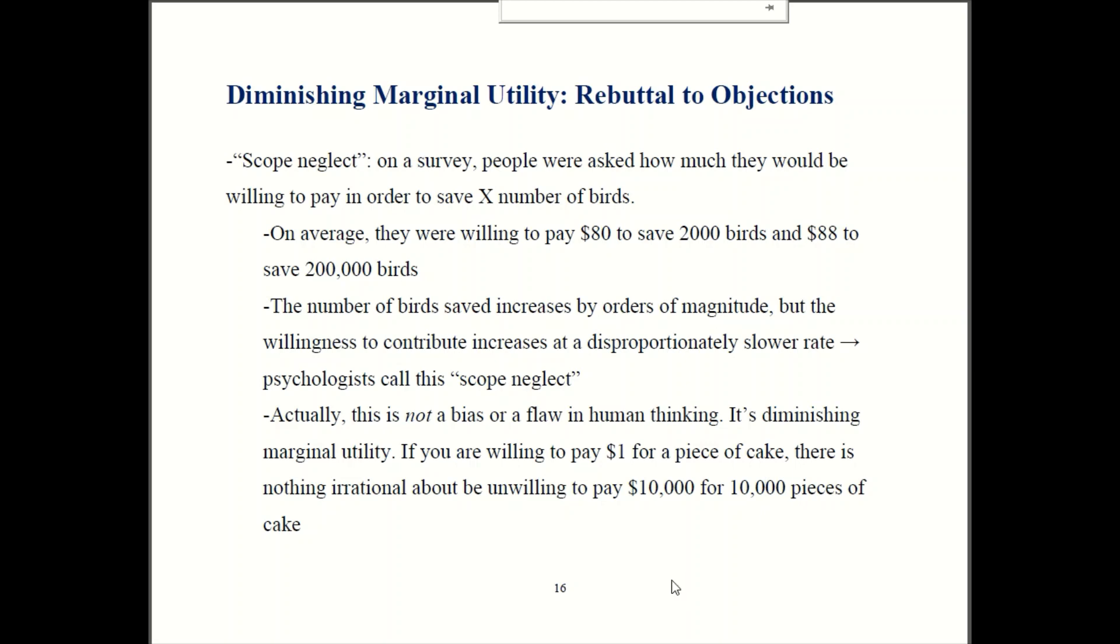So here's another example I heard about. It was written by a psychologist who also did some work in behavioral economics. He wrote about something he called scope neglect. So in a survey they asked the subjects how much money would you pay to save some number of birds. So one group was asked how much you would be willing to pay to save 2,000 birds. Another group was asked how much you would pay to save 20,000. And the third group was asked about saving 200,000.